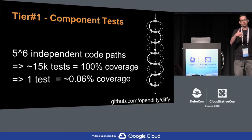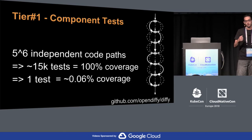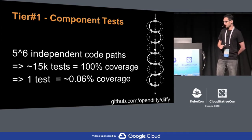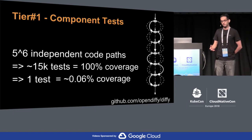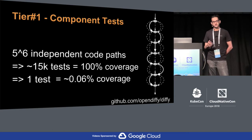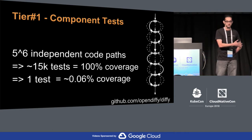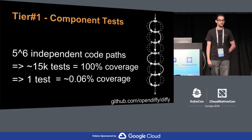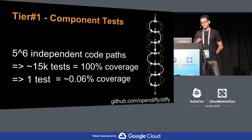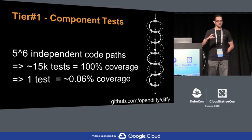The next tier is within a service boundary — the component test boundary. If we have six independent functions, each function having five independent code paths, the problem scale just expanded from five test cases to 15,000 test cases to get 100% coverage. A single test is just giving you 0.06% coverage. This is where things start to break — not a lot of people are writing 15,000 test cases for a single service.